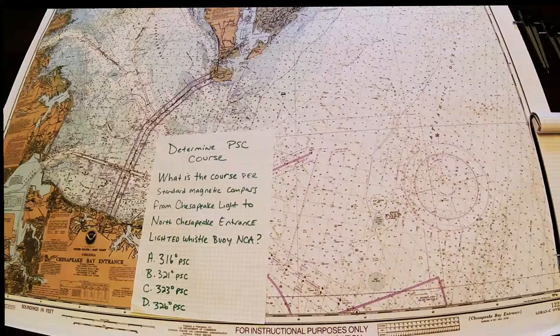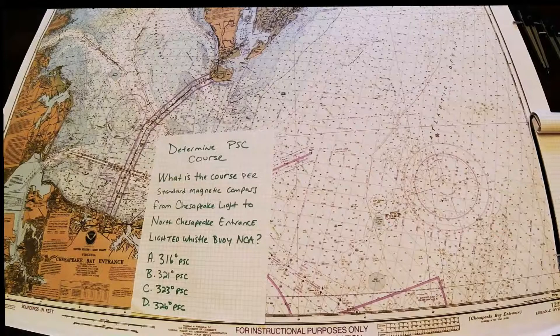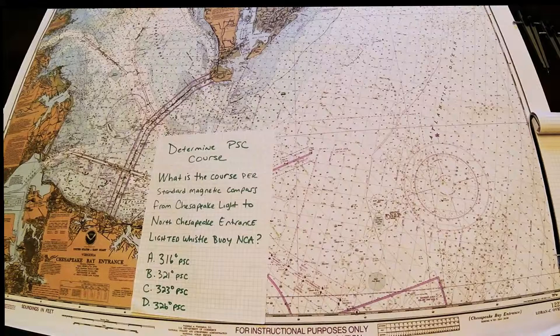In the back section, it will give you an index number. You turn to that index number and typically it will give you a latitude and longitude. For this chart, the 12221, I'm going to look for Chesapeake Light and I know that Chesapeake Light is located right here.